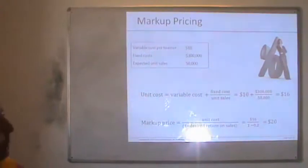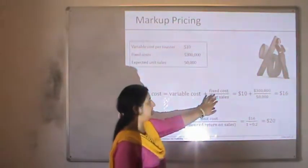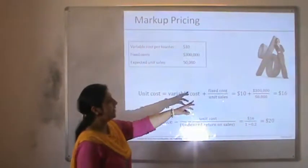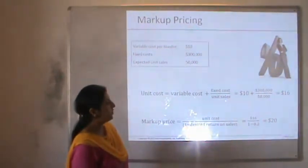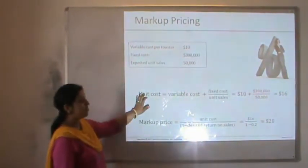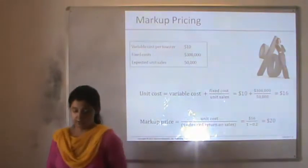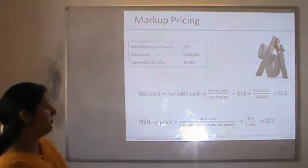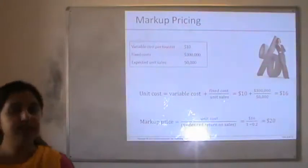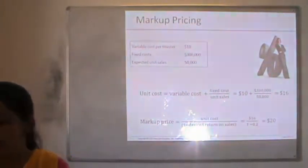Markup pricing suggests that the company would decide the unit cost on the basis of variable cost plus fixed cost divided by the unit sales. For example, variable cost is $10 plus fixed costs of $30,000 over total yield of 50,000 units gives a unit cost of $16. The markup pricing formula is: unit cost divided by (1 minus desired return on sales). With a desired 20% return on sales, $16 divided by (1 minus 0.2) gives $20. That is the markup price. Markup pricing helps the company set a price above the cost already incurred and is also known as add-on pricing or margin pricing.